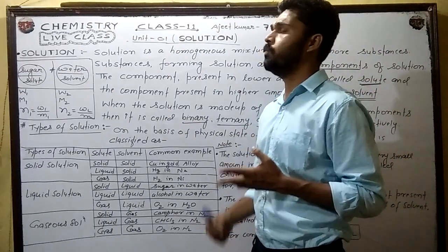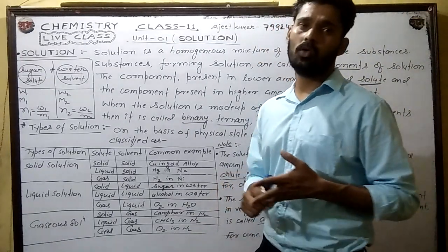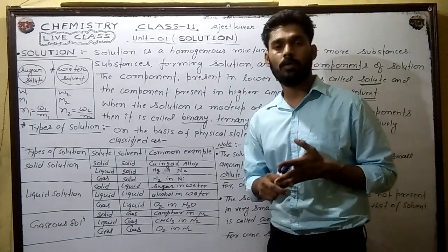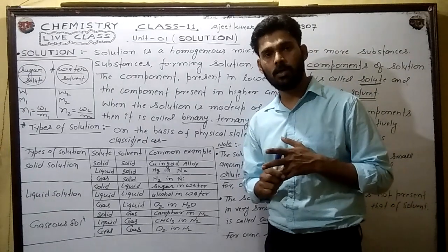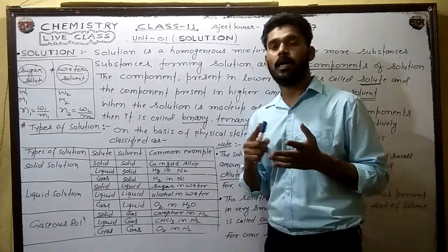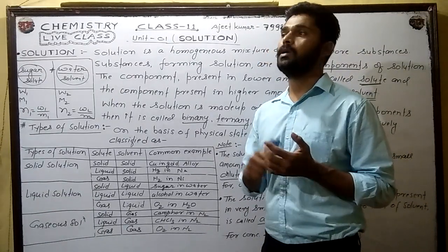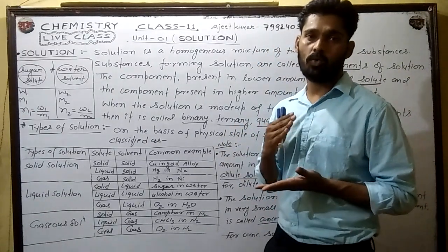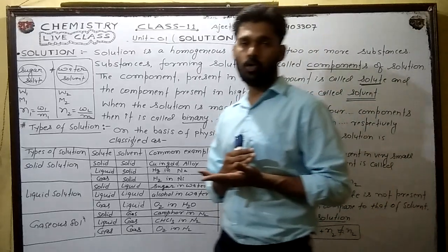This is a homogeneous system. A solution which has two components is called a binary solution. A solution which has three components is called a ternary solution. A solution which has four components is called a quaternary solution.